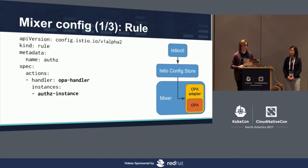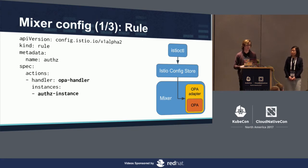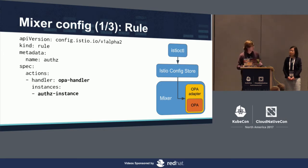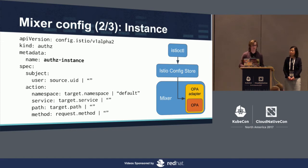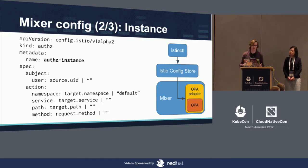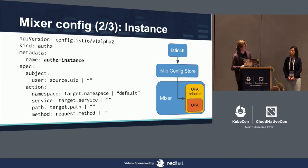When you configure OPA, the first thing to do is create a rule — an Istio Mixer concept. Rules tell Mixer when to send requests off to adapters. In this case, we've created a single rule that says: send all requests to the OPA handler, and supply the authorization instance data. Then we define the authorization instance data by specifying values for the subject and action collections, mapping Istio attributes into them — such as the user ID, target namespace, target service, the path from the request, and the method.